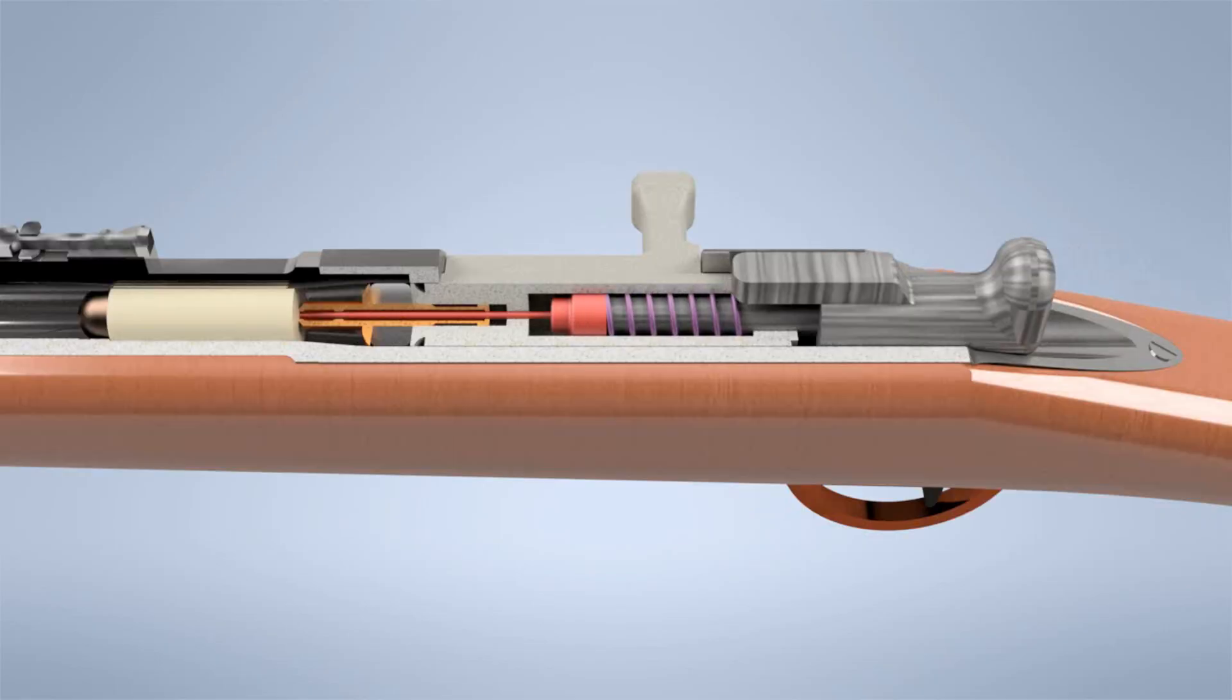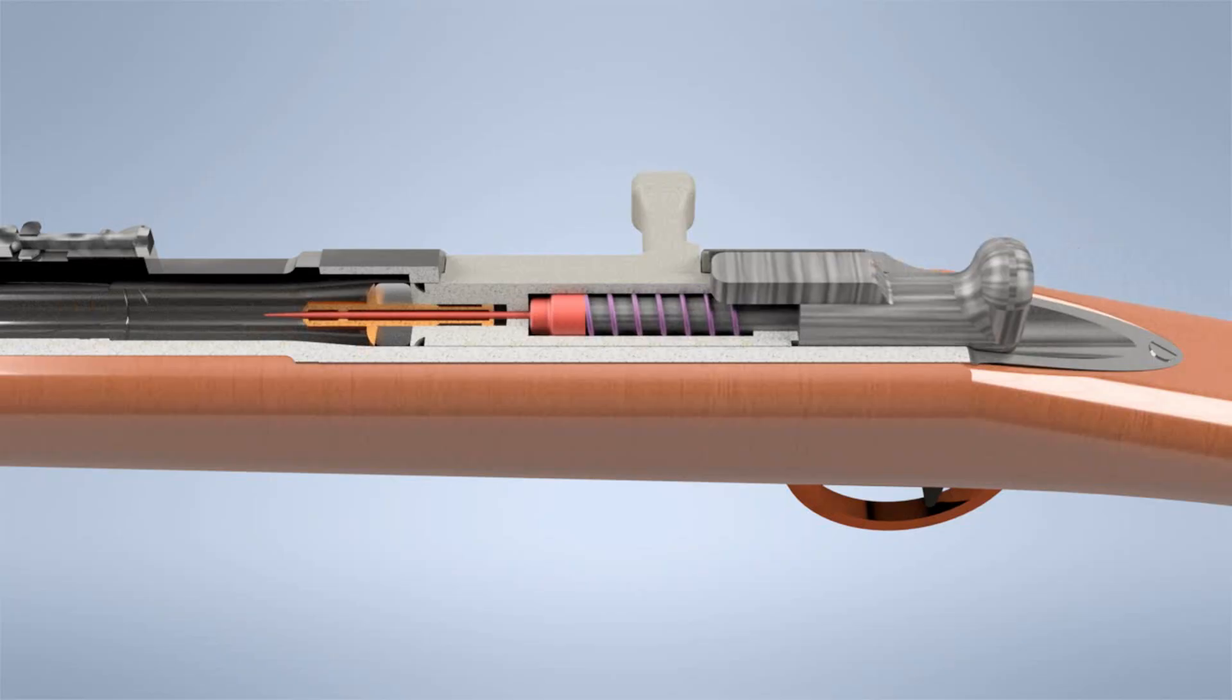Under the resulting gas pressure, a rubber ring, the obturator, is compressed and expands outward, creating a tight seal at the breech.